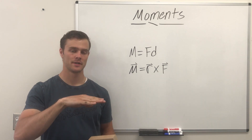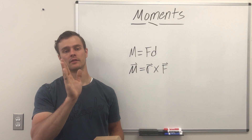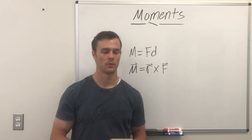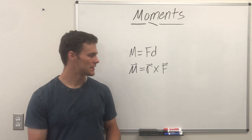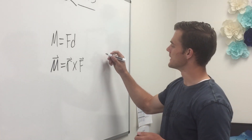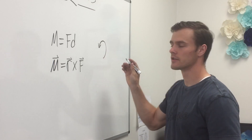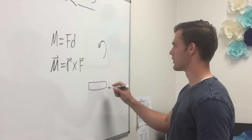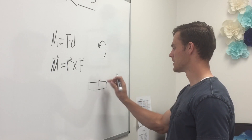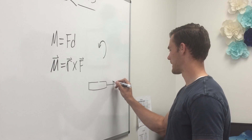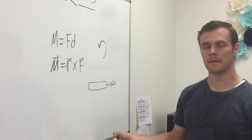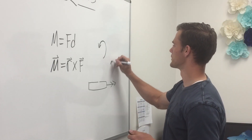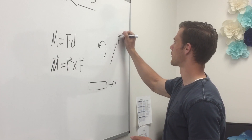The notation we use for moments is either with a curling arrow in the direction the moment is applied, or — if we have a rod being twisted — we'd use a double-headed straight arrow, since a curling arrow on a rod wouldn't look like much of an arrow. Both of those signify a moment or torque being applied to something, whereas a force is usually just a straight arrow with one head.